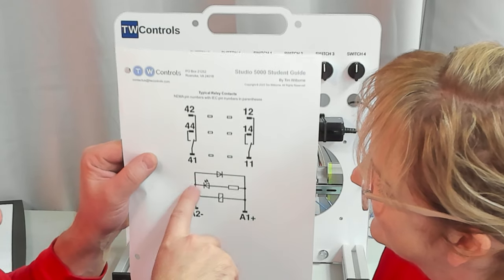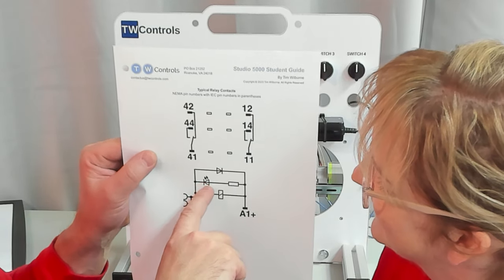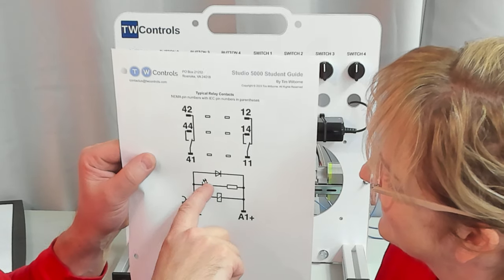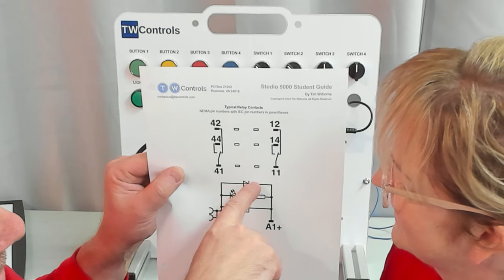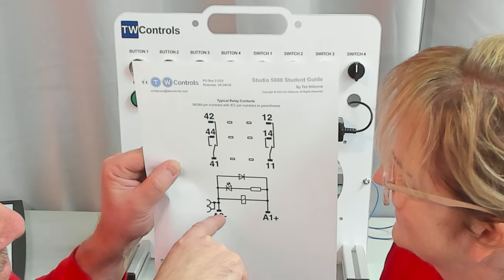But when you start seeing these symbols right here, these are diodes. This diode right here is not going to let current through to get to A2, and so it has to go through its normal circuit, which includes energizing that coil.